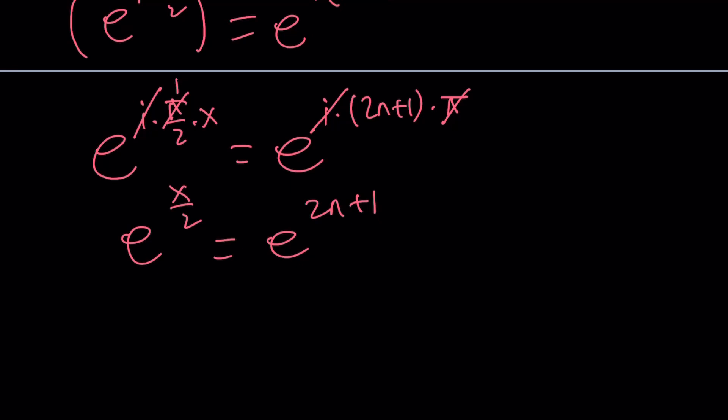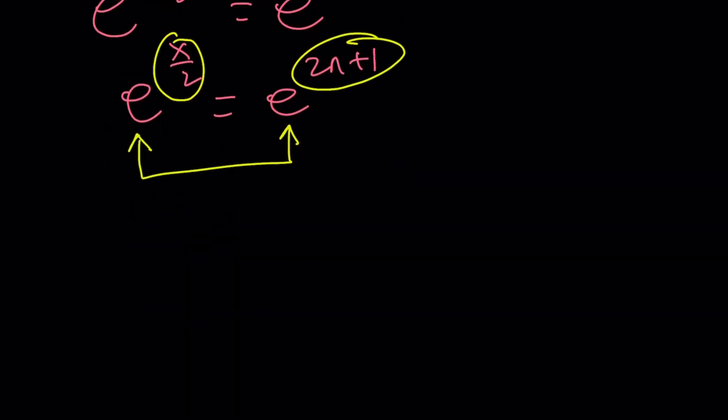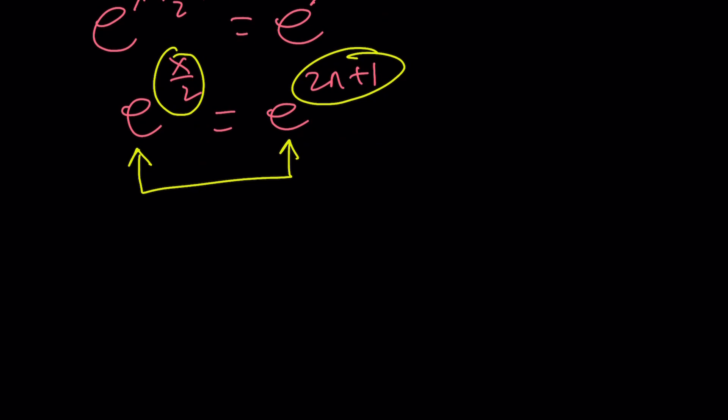But from here, since the exponents, I mean, the numbers are the same and the bases are the same, this basically means that the exponents are also going to be the same. So let's go ahead and write it as follows. x over 2 equals 2n plus 1.